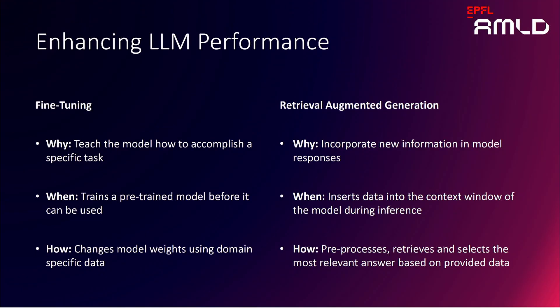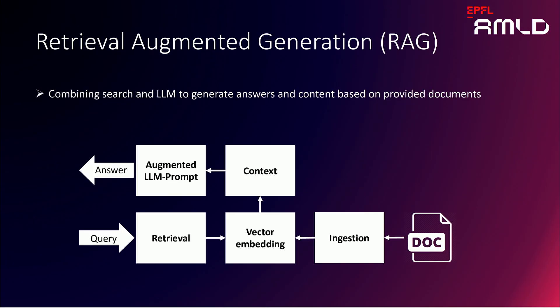Still, if you want to use large language models for use cases like those we have seen in the previous talks, you have to connect them to your own data. Even if these large language models have been trained with billions of parameters, they have no knowledge about your company, no access to your company data, and no domain-specific knowledge about energy utilities, for example. This is where retrieval augmented generation comes into play — it allows you to connect your own company data to large language models.